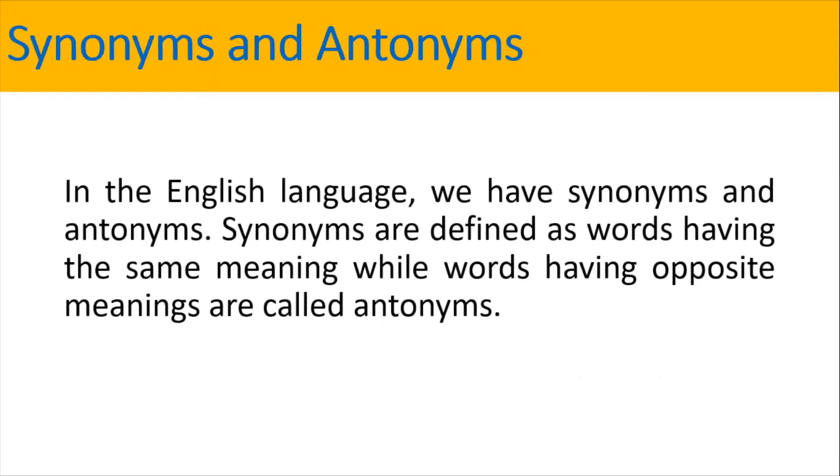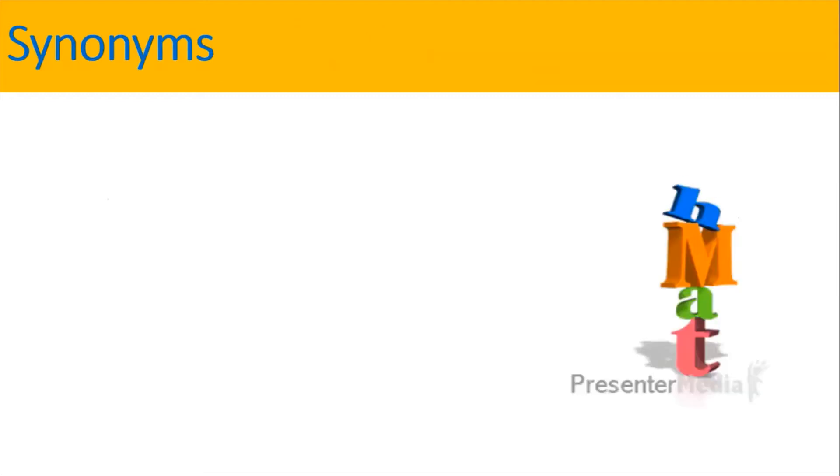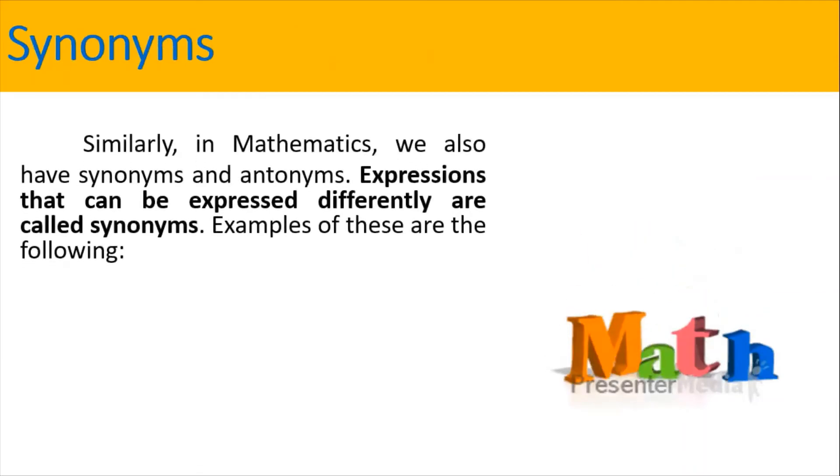In the English language, we have synonyms and antonyms. Synonyms are defined as words having the same meaning, while words having opposite meanings are called antonyms. Similarly, in mathematics, we also have synonyms and antonyms. Expressions that can be expressed differently are called synonyms.